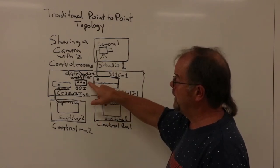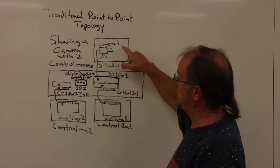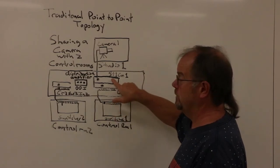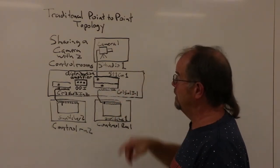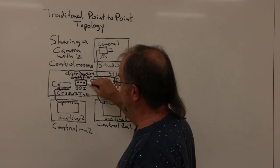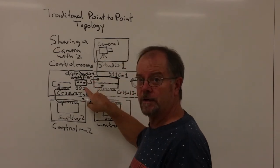The distribution amp is here. We would take the camera in Studio 1 Camera 1, and patch that to the input of the distribution amp.